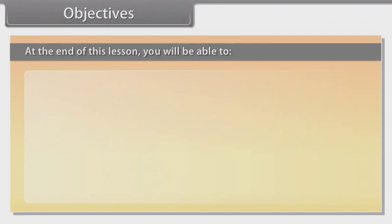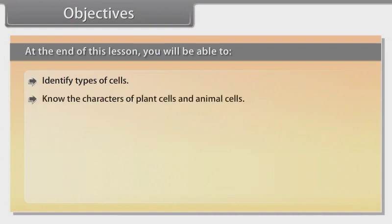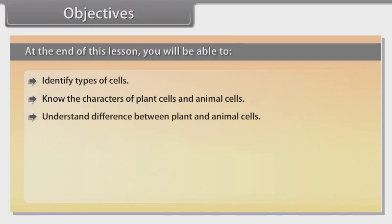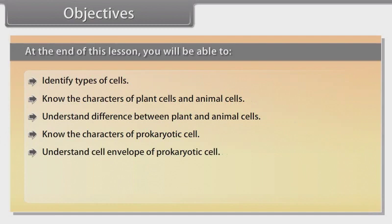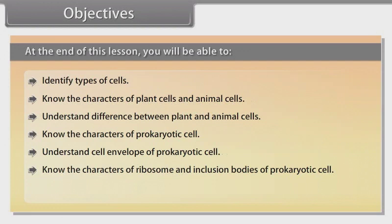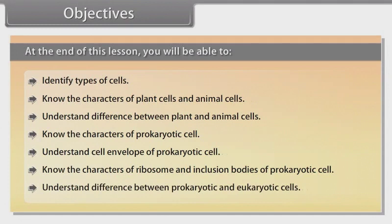Objectives: At the end of this lesson, you will be able to identify types of cells, know the characters of plant cells and animal cells, understand the difference between plant and animal cells, know the characters of prokaryotic cells, understand the cell envelope of prokaryotic cells, know the characters of ribosome and inclusion bodies of prokaryotic cells, and understand the difference between prokaryotic and eukaryotic cells.